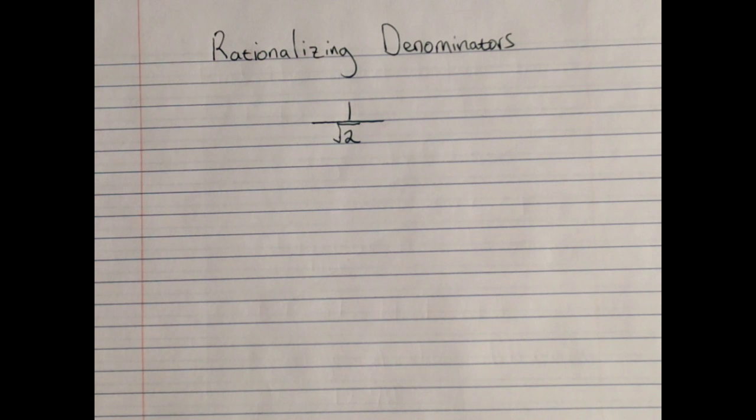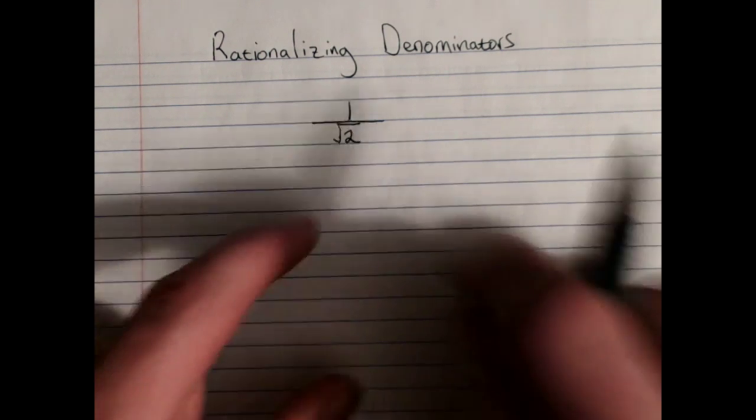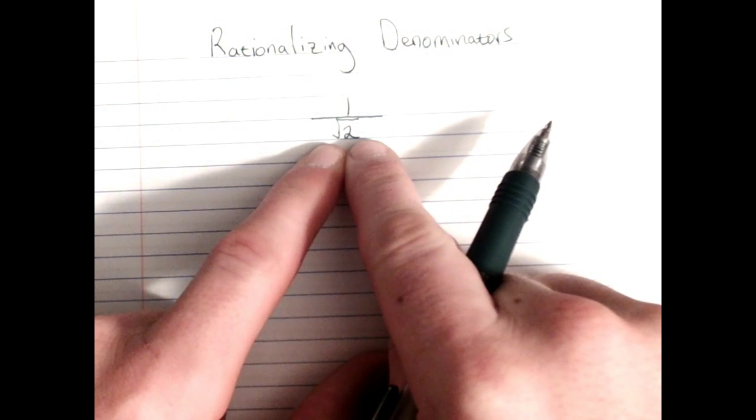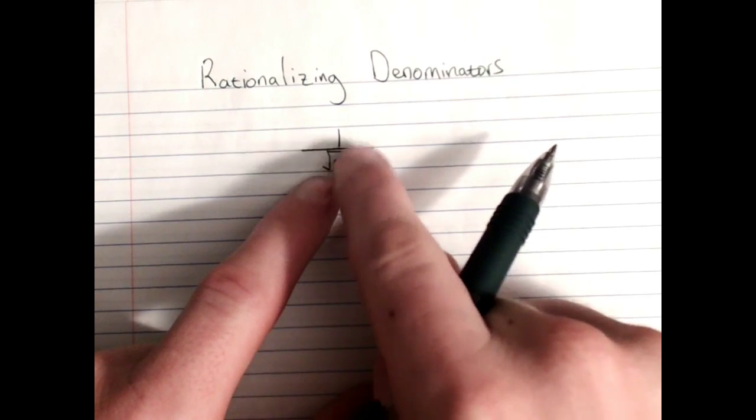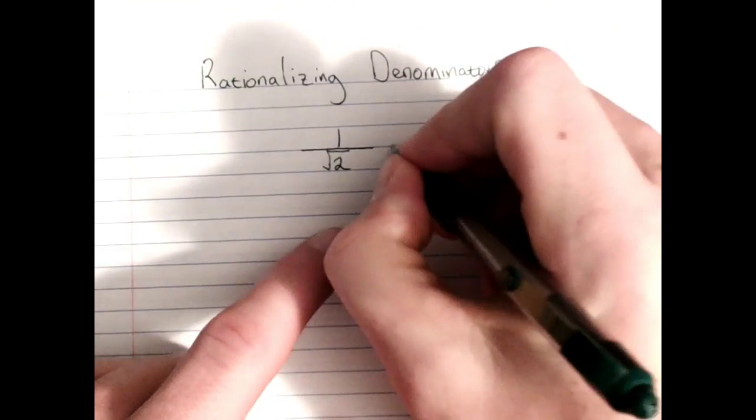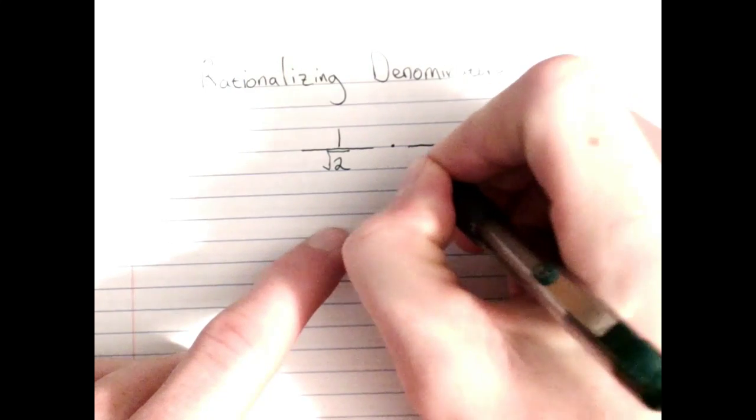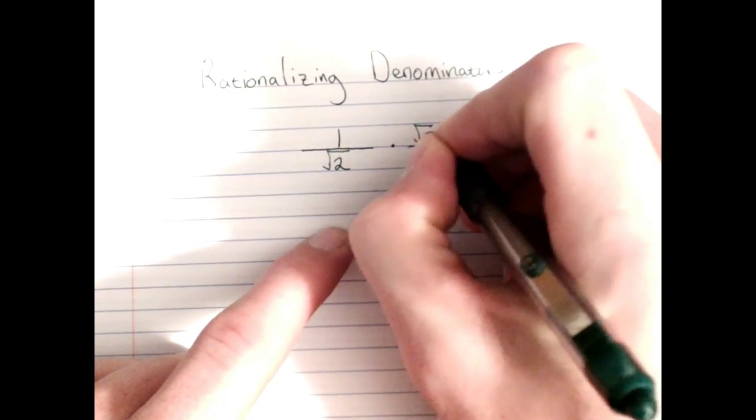All we're going to do is multiply creatively by the number 1. I want to get root 2 out of the denominator and get something else in its place in the numerator. So I'm going to multiply this fraction by root 2 over root 2.